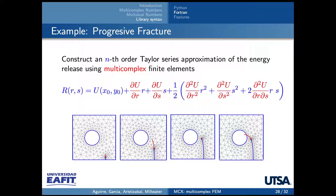As a final example in fracture mechanics, we compute the strain energy using finite element analysis, and from the strain energy we compute n-th order derivatives of the strain energy to reproduce the strain energy release rate. This is a second-order equation, but we have done computations up to fifth degree, and the results are very good. This shows the evolution of the crack obtained with a fourth-degree polynomial — an example where multiple higher-order derivatives are used to compute a solution.